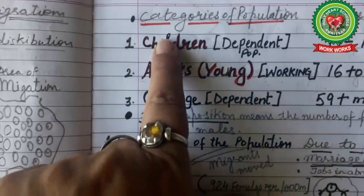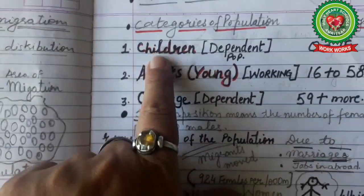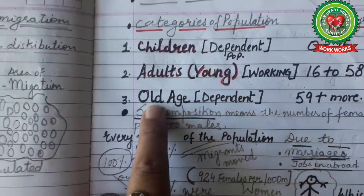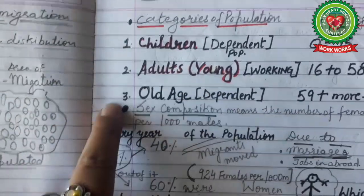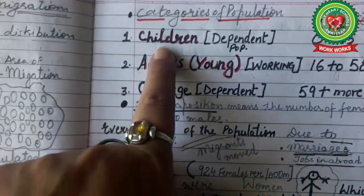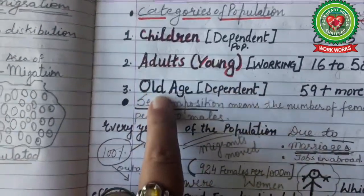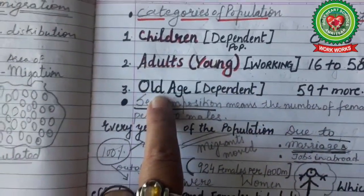If we categorize the full population, we classify the population into three groups: children, adults, and old age.